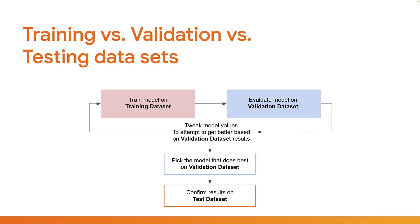Now in this case, the training process is slightly different. First, train a model on the training data. Next, evaluate the model on the validation data and tweak the model to improve itself. Repeat this a certain number of times, then pick the best model that works on the validation data. Then you can test that on the test dataset to see how well it works on data it never saw before.